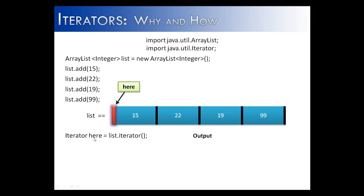You don't say iterator here equals new iterator. And the reason is because there's different implementations for the different data structures that it can iterate through. So each one implements it in its own way. A HashSet wouldn't implement it the same way an ArrayList would.